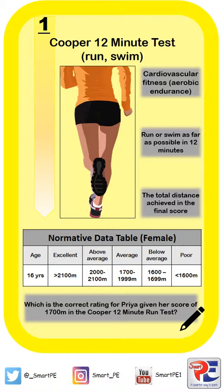Now, the component of fitness this test measures is cardiovascular fitness or aerobic endurance. And the protocol is pretty straightforward — you run or you swim as far as possible in 12 minutes, and the total distance is your final score.